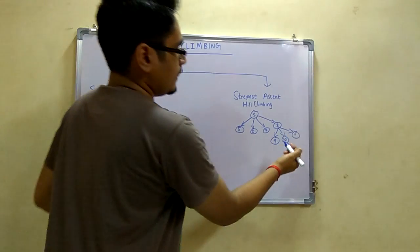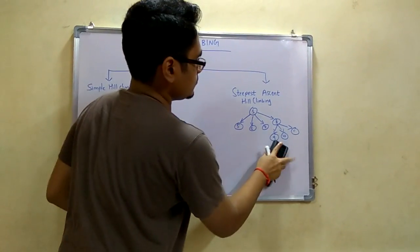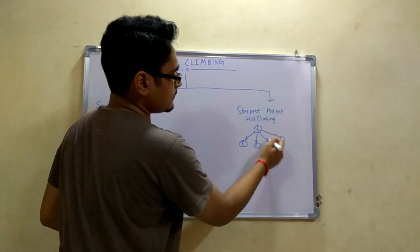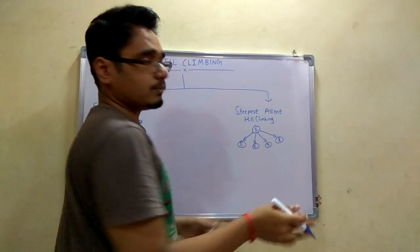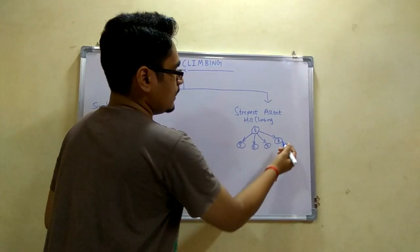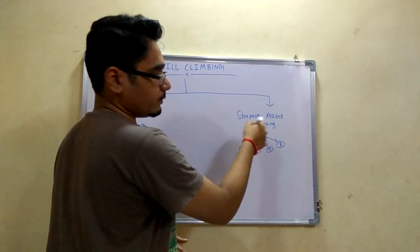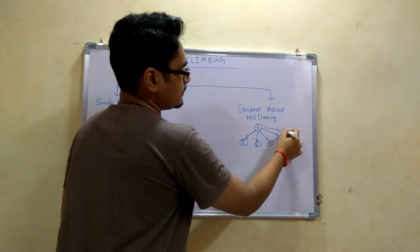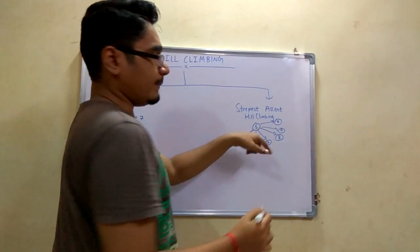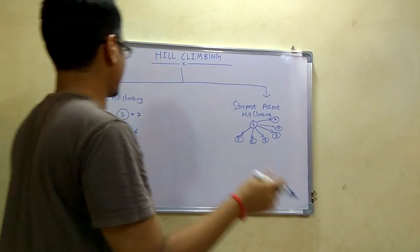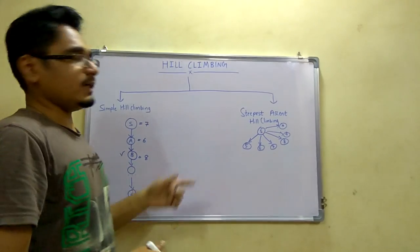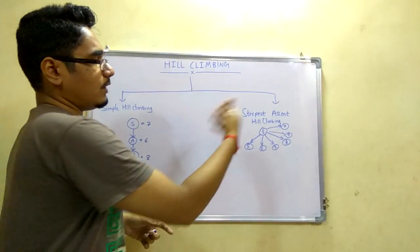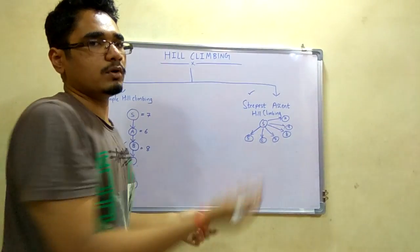If a state is reached and its successors are produced but it doesn't have further successors, then in this approach we can backtrack to the current state and explore other states like 9 or 10. We can backtrack in steepest ascent hill climbing, whereas in simple hill climbing this method cannot be applied. Hence steepest ascent is the more preferred one.